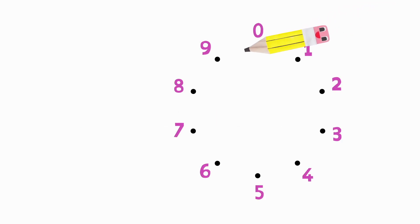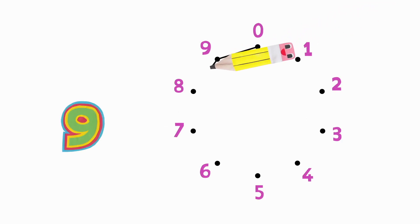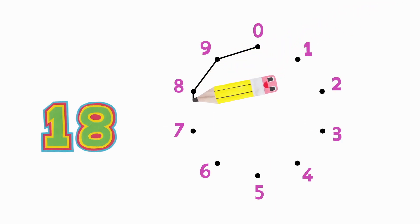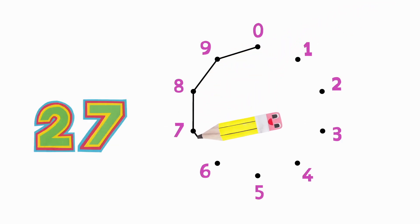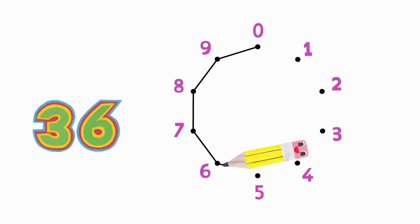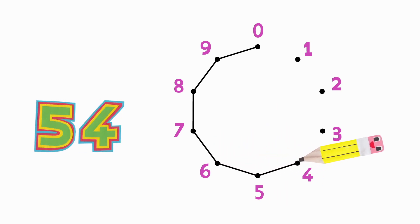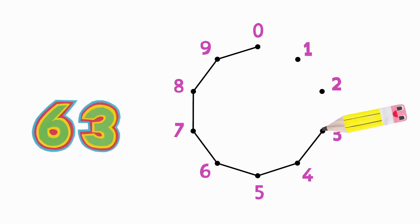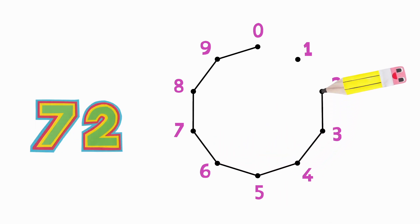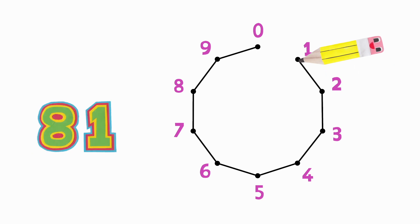Nine times table. Nine, eighteen, twenty-seven, thirty-six, forty-five, fifty-four, sixty-three, seventy-two, eighty-one, ninety.